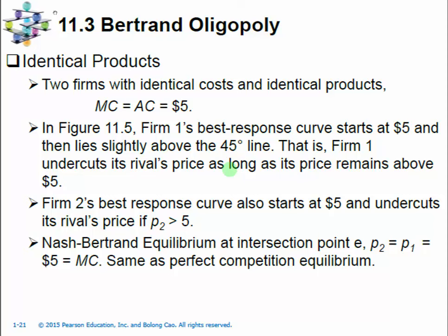We still assume identical products and identical costs. We still assume the constant marginal cost at $5, since it's a constant marginal cost that will equal the average cost as well. We can view these Bertrand model firms as having very little capacity constraint, which means as long as there is a little bit of margin — the price is slightly higher than the marginal cost or average cost — there is some money to be made, and these firms can cut their price and take over the whole quantity demanded by the market.